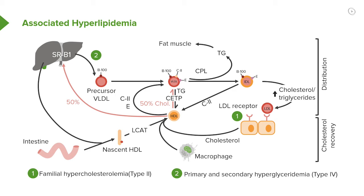Now you have VLDL — what does it contain? Triglycerides. What did the tissue require for proper synthesis of the cell membrane, cortisol, testosterone, or estrogen? It wasn't triglycerides being delivered — it was cholesterol. So now, lipoprotein lipase removes the triglyceride from VLDL, forming IDL — intermediate density lipoprotein — and eventually your LDL.